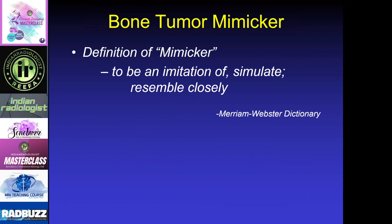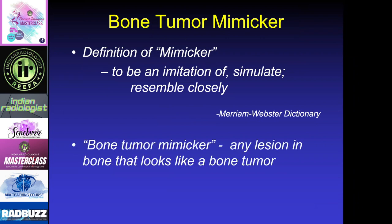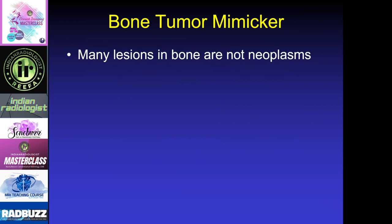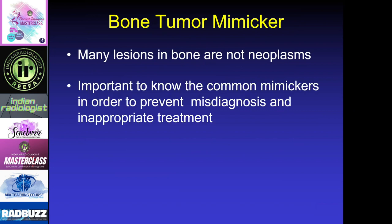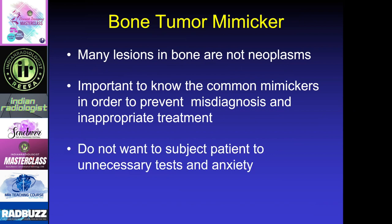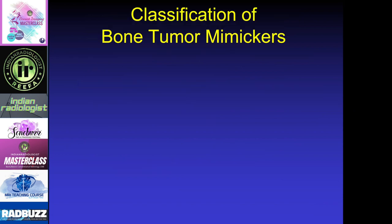Merriam-Webster dictionary defines a mimicker as someone to be an imitation of, simulate, or closely resemble. So essentially a bone tumor mimicker is any lesion in bone that looks like a bone tumor. Many lesions in bones are not true neoplasms, and it's important to know the common mimickers in order to prevent misdiagnosis and inappropriate treatment, and also we don't want to subject a patient to unnecessary tests and anxiety for them to think that they actually have a bone tumor when they do not.